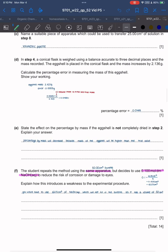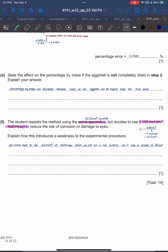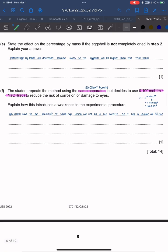Explain the effect on the percentage by mass if the eggshell is not completely dried in step 2. Percentage by mass will decrease because the mass of the eggshell will be higher than the true value if not completely dried. When you calculate percentage by mass, the denominator will increase while the numerator stays the same, so percentage by mass decreases.